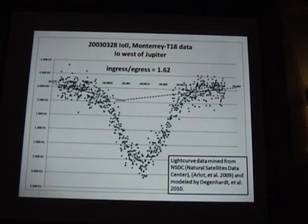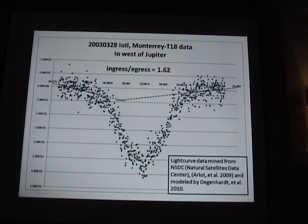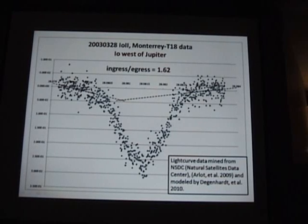As another source, I data-mined the IMCCE database and randomly started pulling light curves — and indeed the same asymmetry was found. There is a problem: they typically only have six-minute wing data, which presents a limitation. But not only did I find the asymmetry, it was also consistent with the Jupiter-facing limb. So this was yet another data point from a 2003 apparition of the mutual event season.